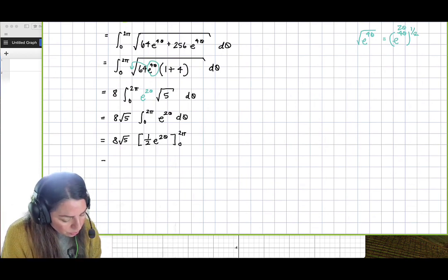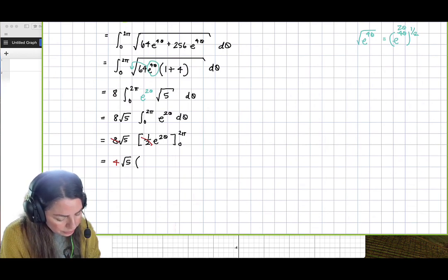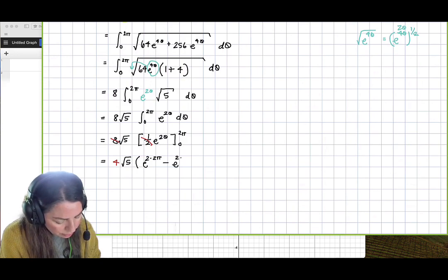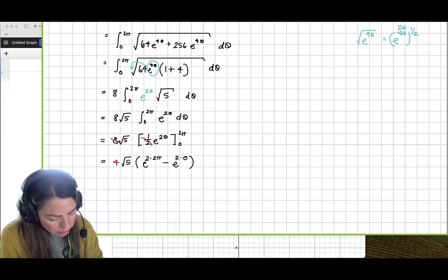So now we're going to have, if I reduce out that half and that 8, we get a 4 square root 5 times e to the 2 times 2 pi minus e to the 2 times 0. So we just went ahead and put those in right there,